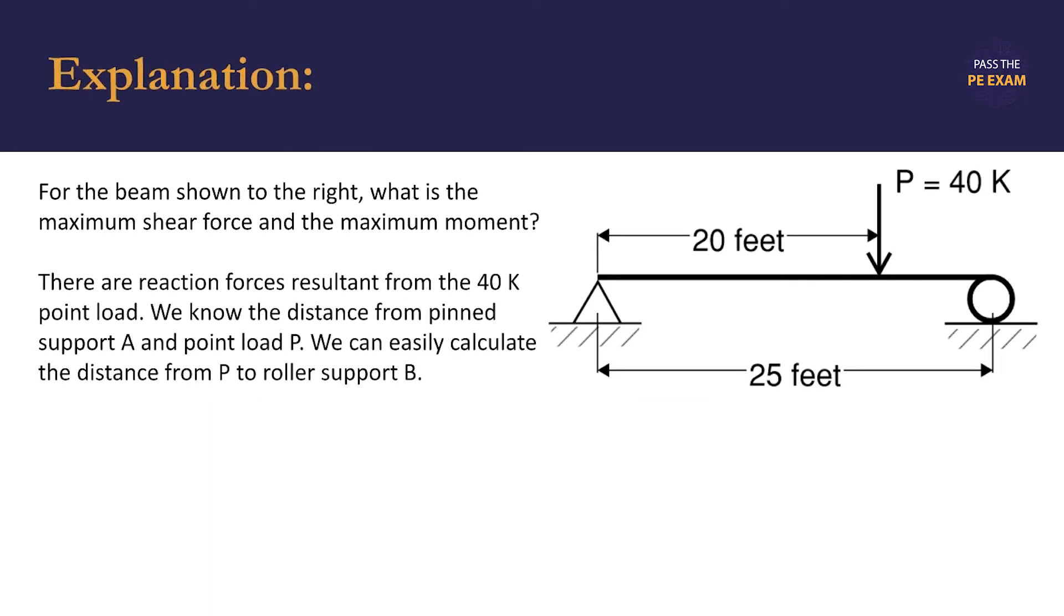Looking at the diagram, the beam is 25 feet in length (L). There's a 40 kip point load P applied 20 feet to the right of the pin support on the left, which we'll call A. Accordingly, the point load is 5 feet away from the roller support on the right, point B. We'll fill in the diagram with our labels for reference.